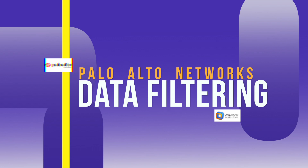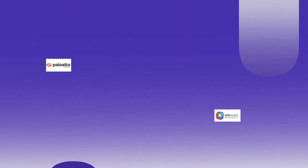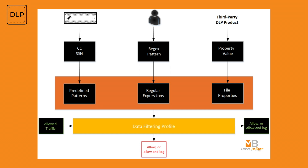I'm going to be doing all this using a VM-Series Palo Alto next-generation firewall inside of VMware Workstation. Data filtering profiles are used to prevent sensitive information such as credit card numbers, US social security numbers, or proprietary data from leaving your protected network. Data filtering profiles are attached to security policy rules that allow traffic, and the profile can then scan for matching data patterns.